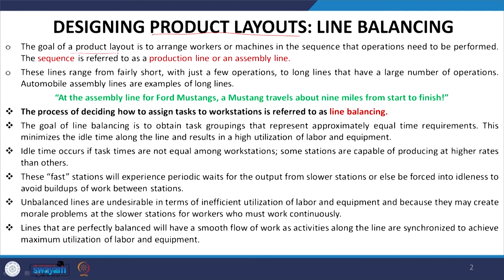The goal of a product layout is to arrange workers or machines in the sequence that operations need to be performed. This sequence is referred to as a product line or assembly line. These assembly lines range from fairly short with just a few operations — like the Singapore/London example with only three operations — to very long lines like assembling a car engine, which may take over 100 operations. Automobile assembly lines are examples of long lines where more than 100 operations are performed.